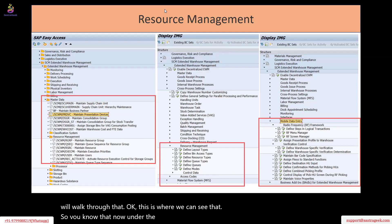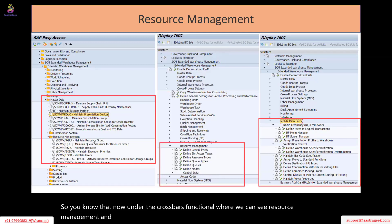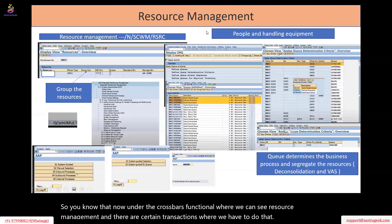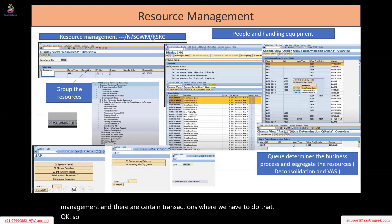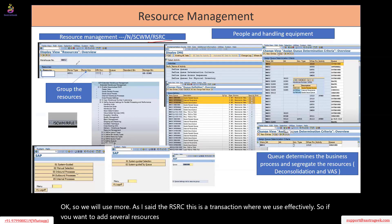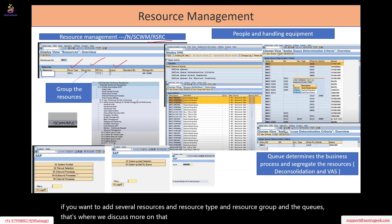Under the cross functional settings, where we can see resource management, there are certain transactions where we have to do that. We will use the RSRC transaction — this is the transaction where we use effectively. If you want to add several resources, resource types, resource groups, and queues, that's where we discuss more on that.